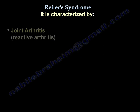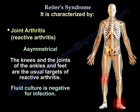Joint arthritis or reactive arthritis — it is asymmetrical. The knees and the joints of the ankles and feet are the usual targets of reactive arthritis. Fluid culture is negative for infection.